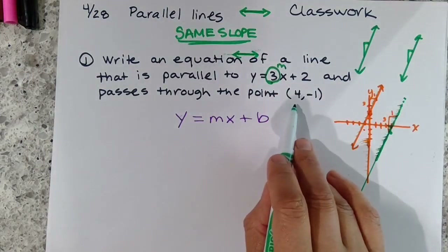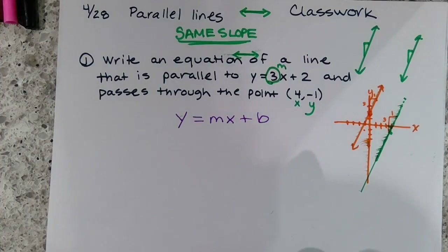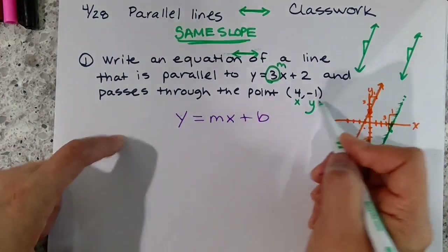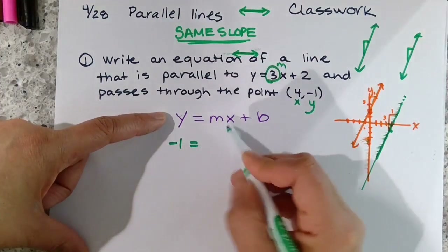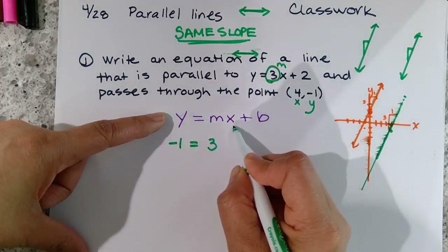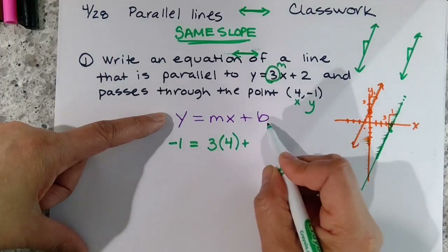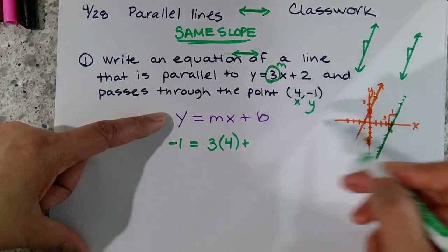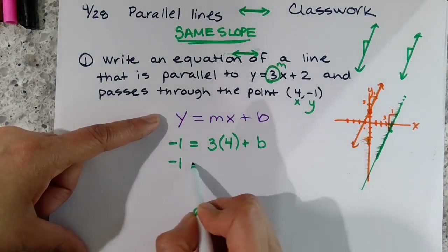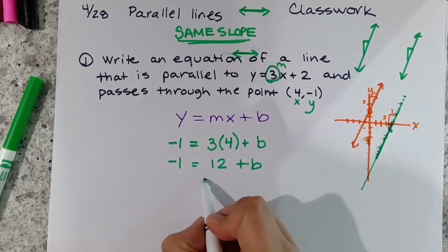The point (4, -1) gives us our x and y coordinates, which we plug into the equation. We substitute y = -1, m = 3, and x = 4, so the equation becomes: -1 equals 3 times 4 plus b. Simplifying: -1 equals 12 plus b. We don't know b — that's what we're solving for. Subtracting 12 gives us b equals -13.